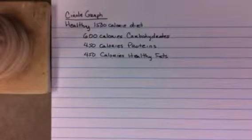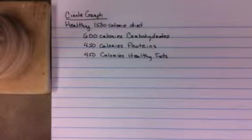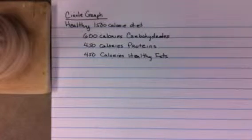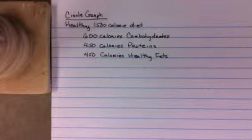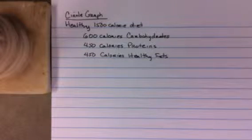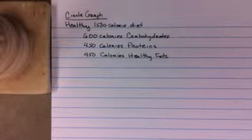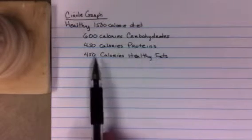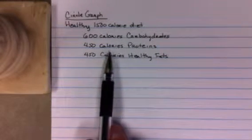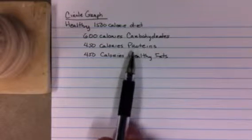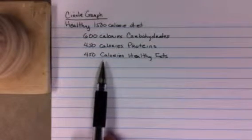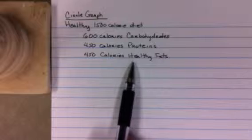This clip is about making circle graphs. A recent expert describing a healthy 1500 calorie diet suggested that 600 calories should be carbohydrates, 450 calories should be proteins, and 450 calories should be made up of healthy fats.